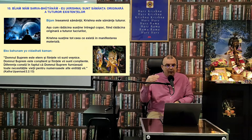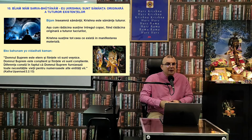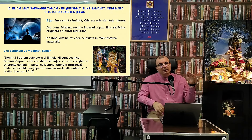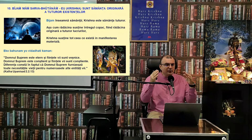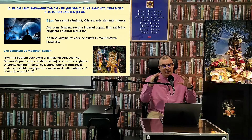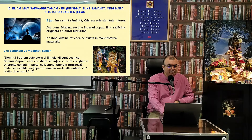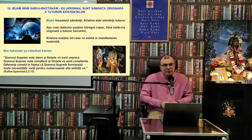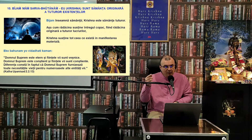Krishna spune: Eu sunt sămânța originară a tuturor existenților. La fel ca în lecțiile anterioare, vom analiza fiecare calitate din punct de vedere al semnificației directe și al unui sens mai subtil, ezoteric. Sensul direct: mâncarea noastră constituie din grâne, din semințe. Baza mâncării noastre este porumbul, orezul, ovăsul, grâul. Vedele descriu că grâul este important pentru dezvoltarea corpului și a inteligenței.